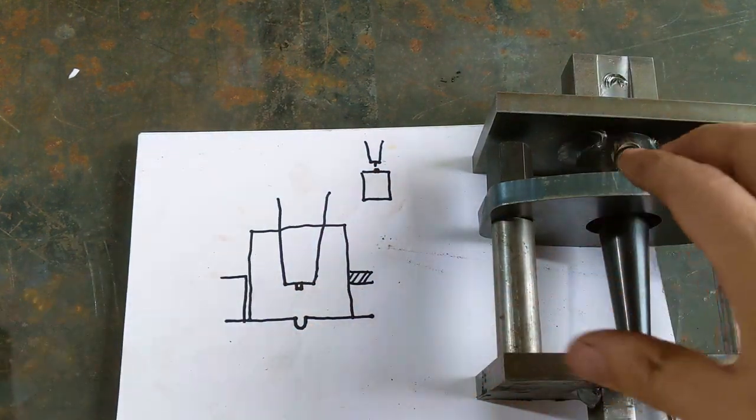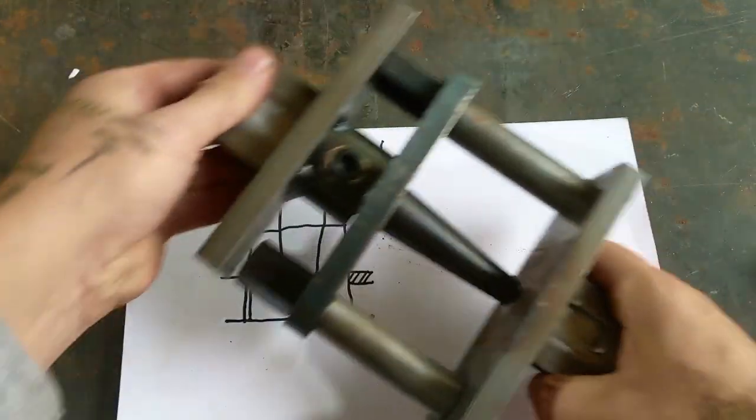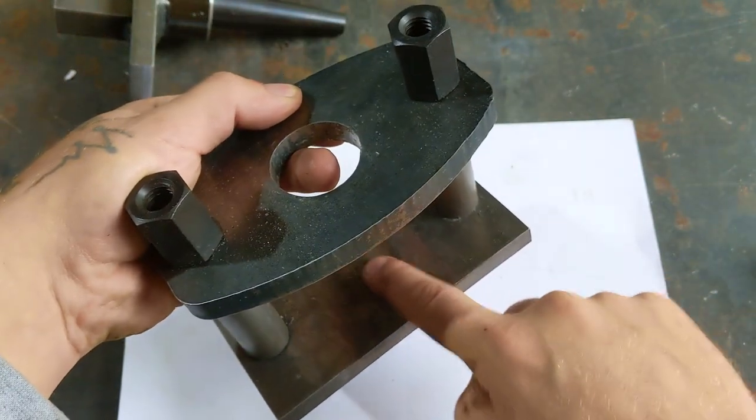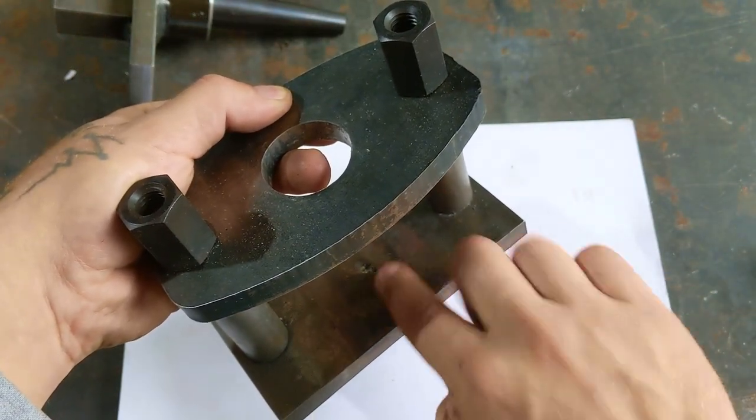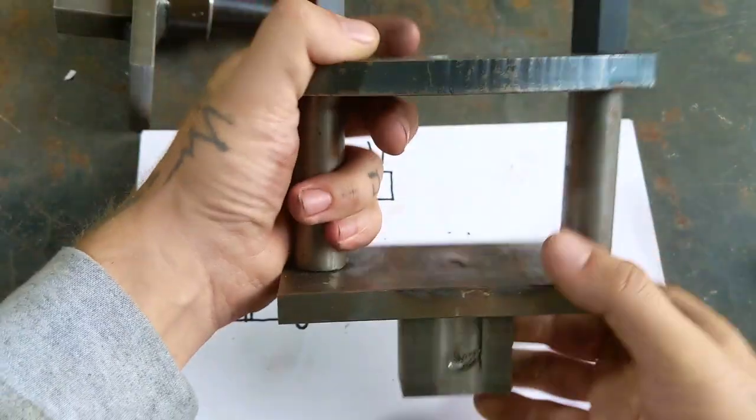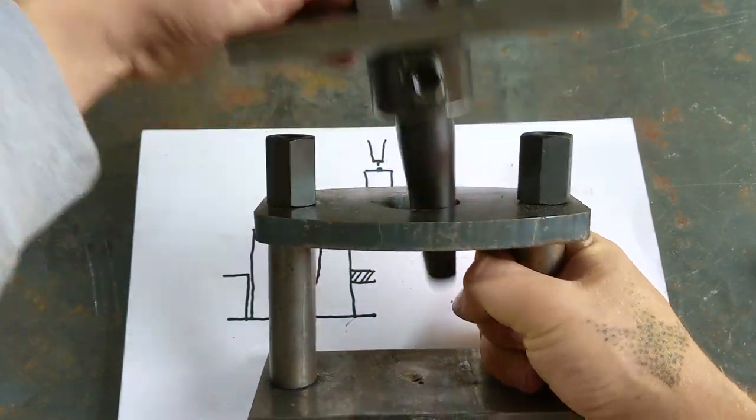All you need to do, if you've already used your punch set, take a little angle grinder in here. You can see this one I've had a lot of punches through. You can put a little weld there, grind it flat, put this die set in your press, and then just let it bottom out.